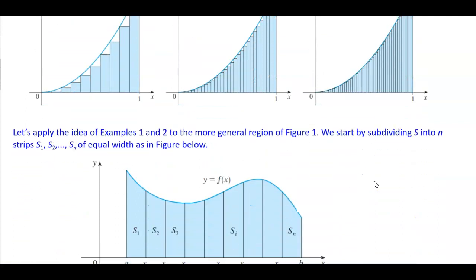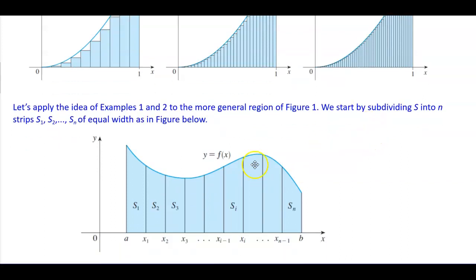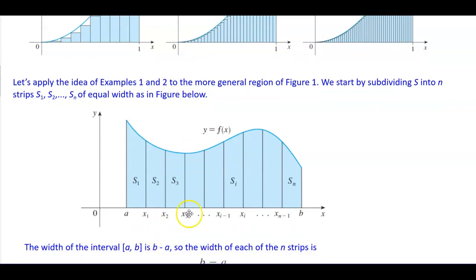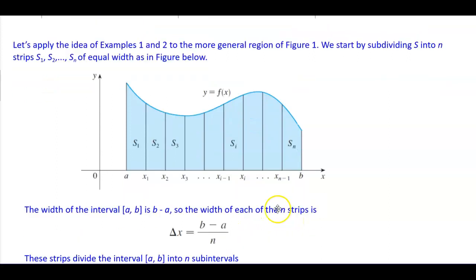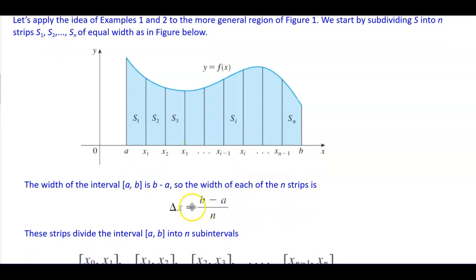Now let's apply the idea of Examples 1 and 2 to the more general region of Figure 1. We start by subdividing S into n strips — S1, S2, S3, all the way to S subscript n — of equal width, going from a to b. The width of the interval from a to b is b minus a, so the width of each of the n strips is delta x, which equals (b minus a) over n.